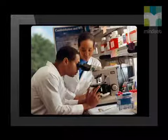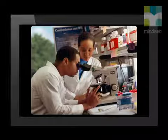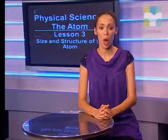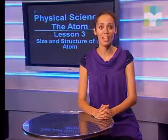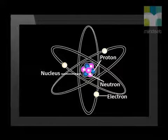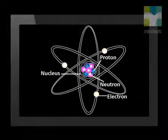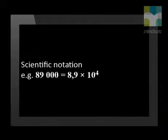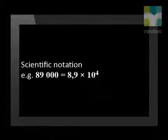Atoms are extremely small, submicroscopic particles. This means that they are so small we can't even view them under a microscope. What we will cover today is based on the Rutherford atomic model. We will try and get a rough estimate of the mass and diameter of an atom. Because the mass and diameter of atoms are so small,